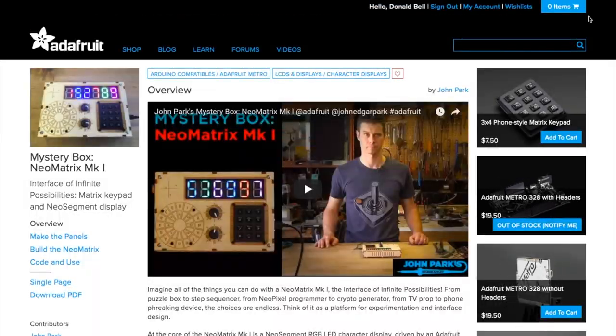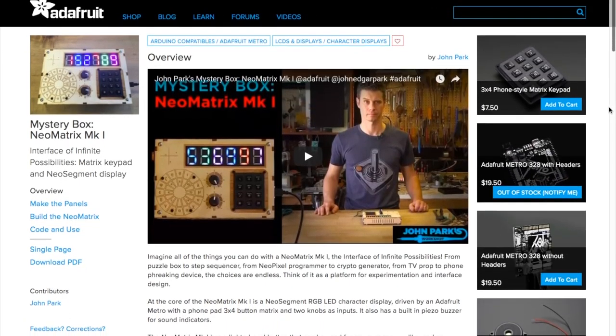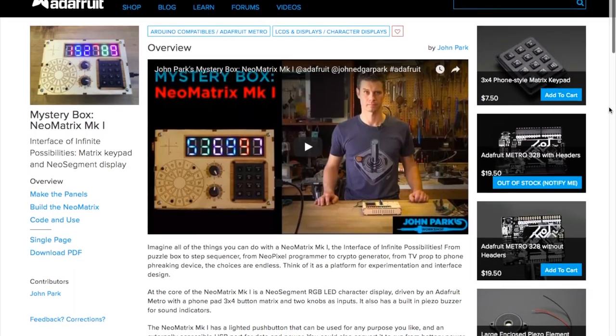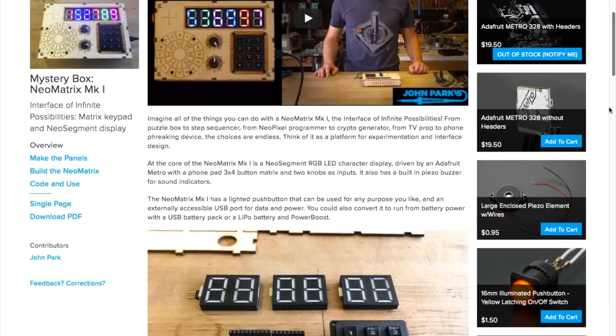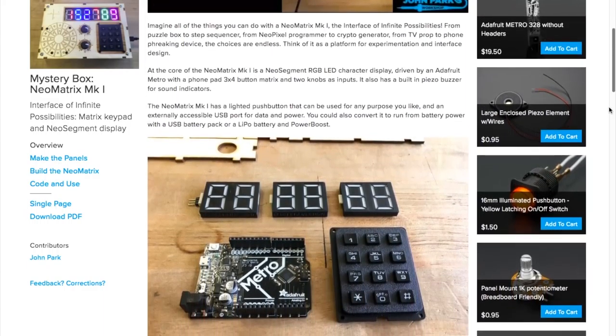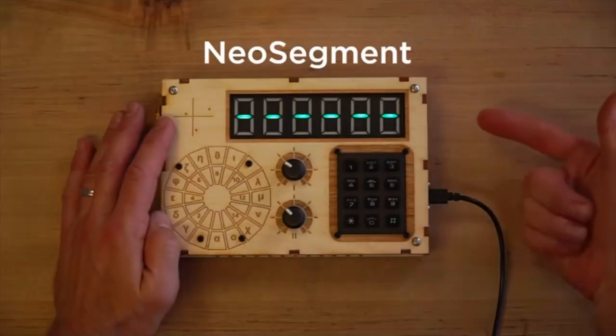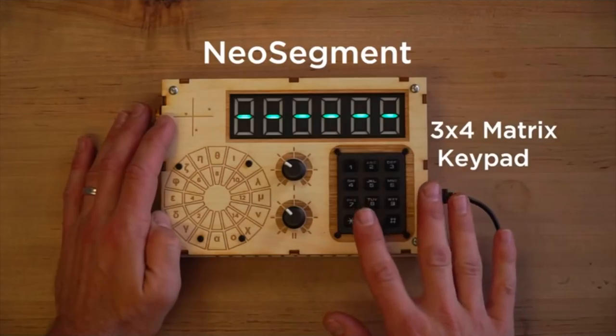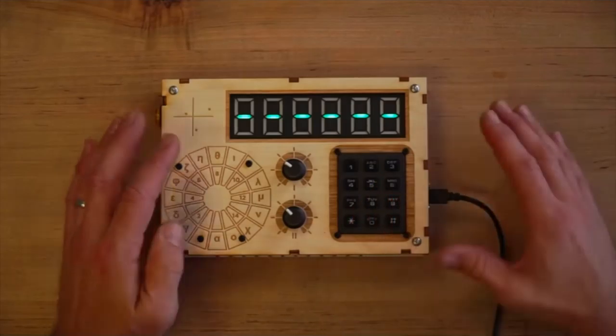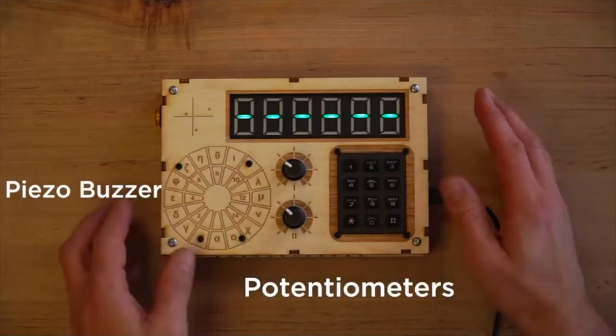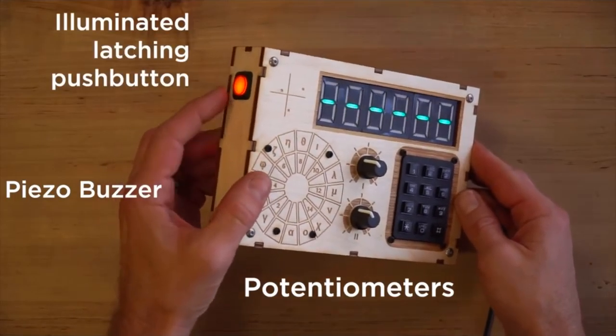For another great gift-worthy project, check out this custom mystery box by John Park. This is another one you could take a lot of different ways. It's essentially a $20 Adafruit Metro board stuffed into a cool enclosure with potentiometers, a keypad, and a light-up button for input, and a nice big RGB character display and piezo speaker for output.